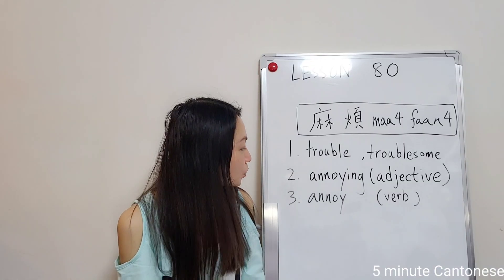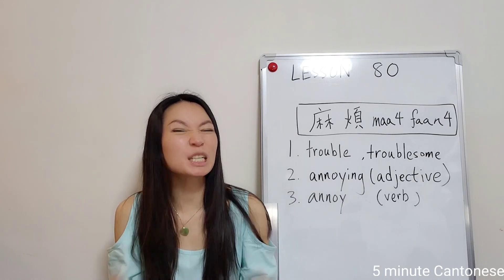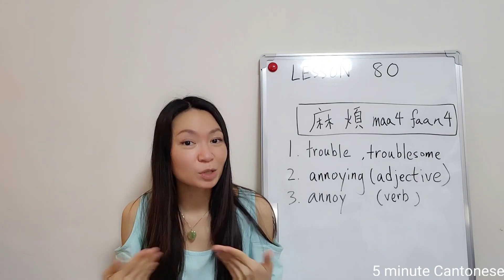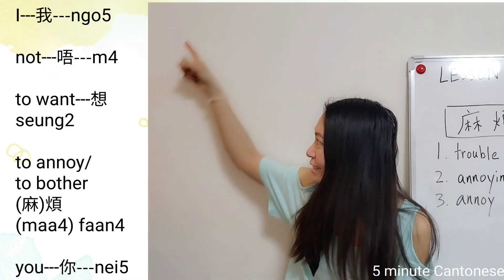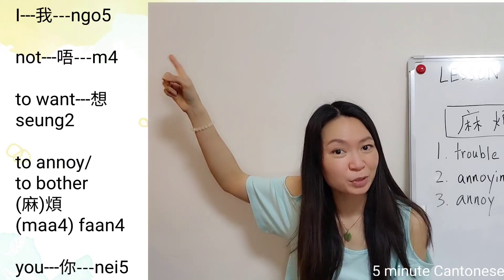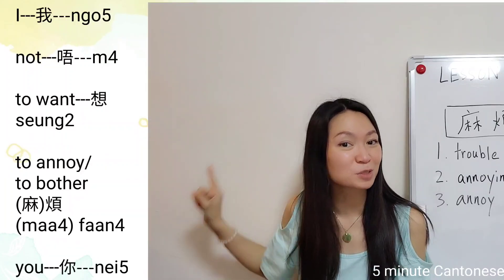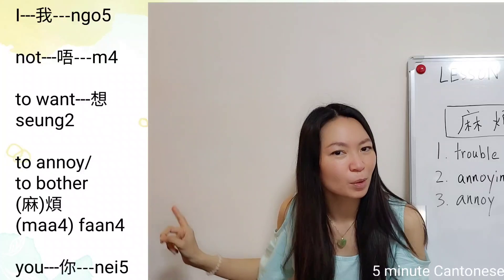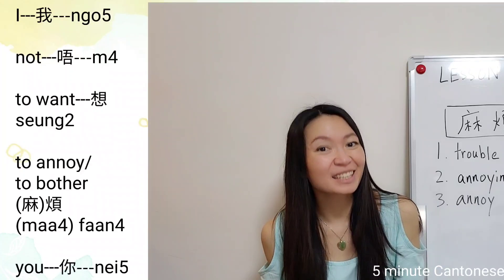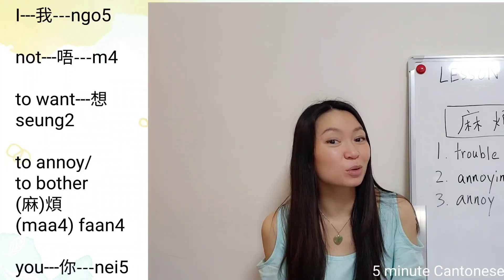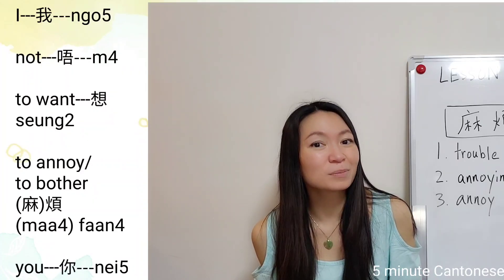Number three — 麻煩 can also be used as a verb, meaning 'to annoy,' 'to bother,' or 'to irritate someone.' For example, your friend wants to help you with grocery shopping but you don't want to bother her. You say: 我唔想麻煩你。 You can also drop 麻 and say 我唔想煩你。